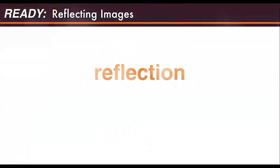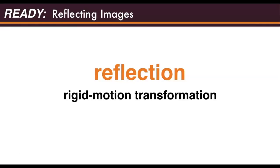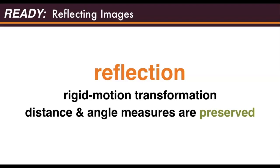In Math 2, you learned how to reflect images on the coordinate plane. Remember that a reflection is a rigid motion transformation, meaning that the distance and angle measures within the shape are preserved.